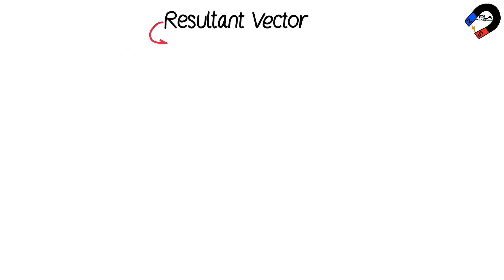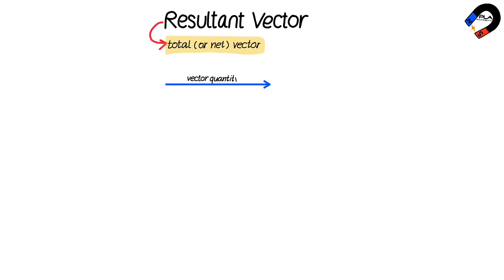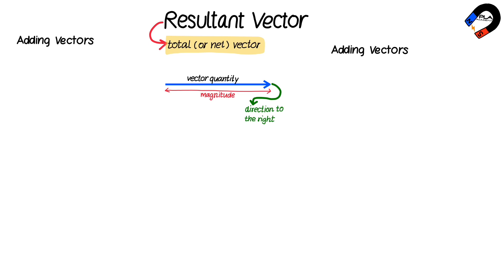A resultant vector is the total or net vector. Vector quantities are represented by arrows — the arrowhead indicates the direction of the vector and the length of the arrow represents the magnitude. There are two methods that can be used to find the resultant vector.